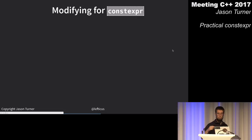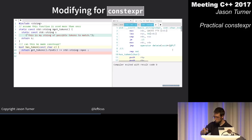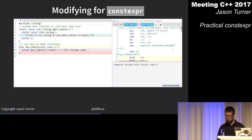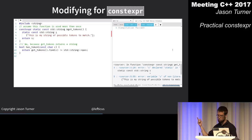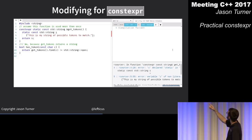To make has_token constexpr we need to start at the beginning and make get_tokens constexpr. But we have the static and the non-literal type issues to solve first.